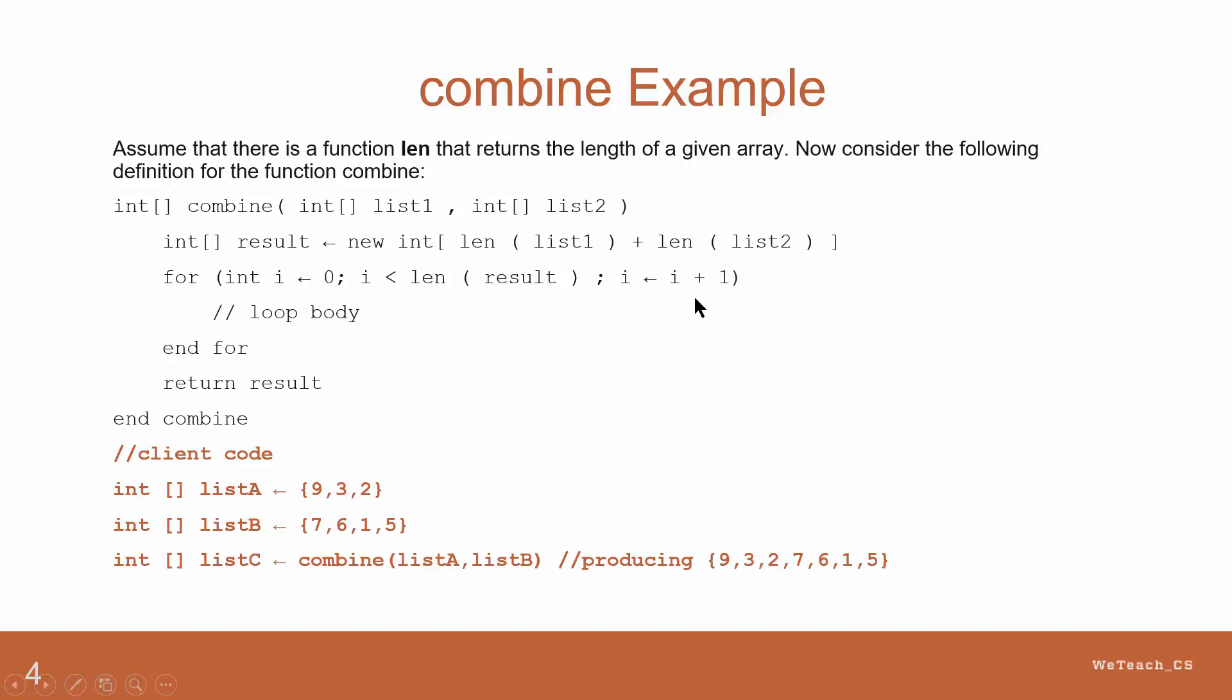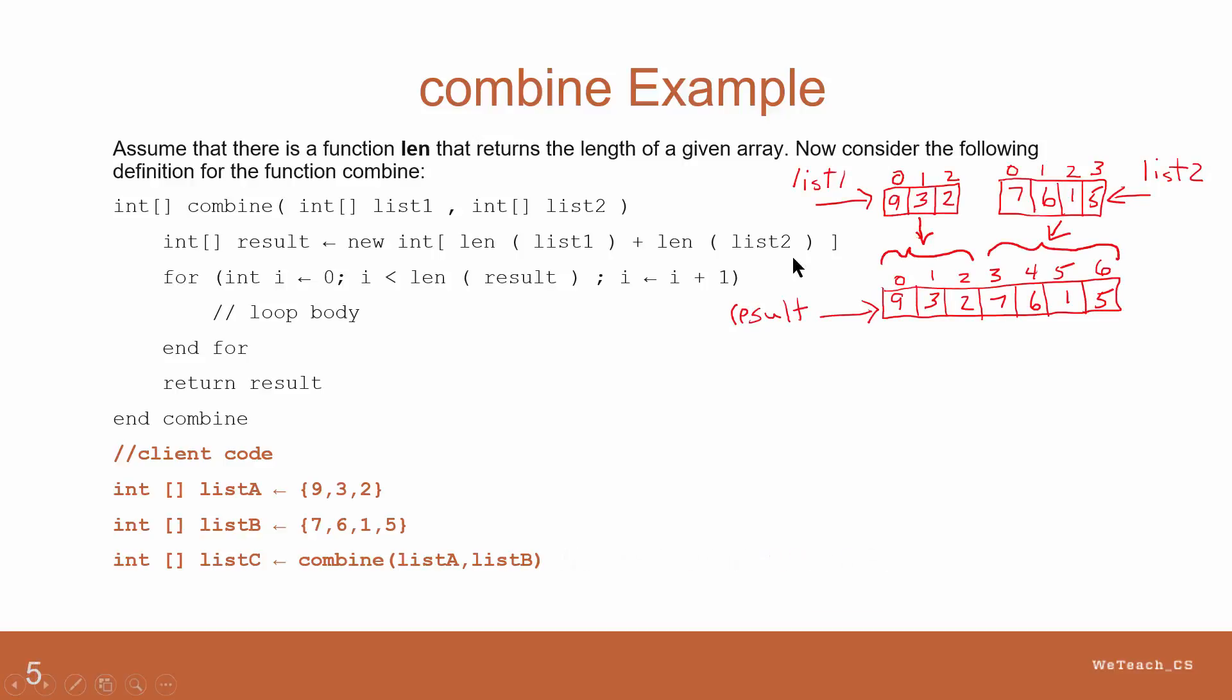The values of list1 go into the positions 0, 1 and 2 of the result array, and then the values of list2 go into the positions 3, 4, 5 and 6 of the result array.